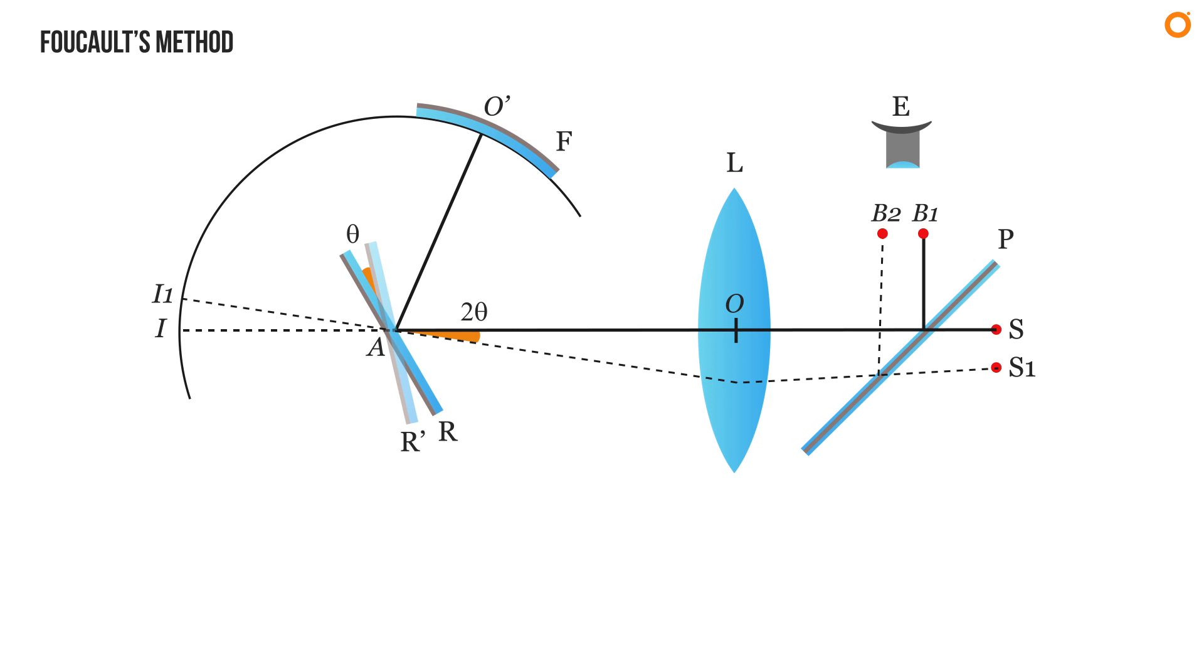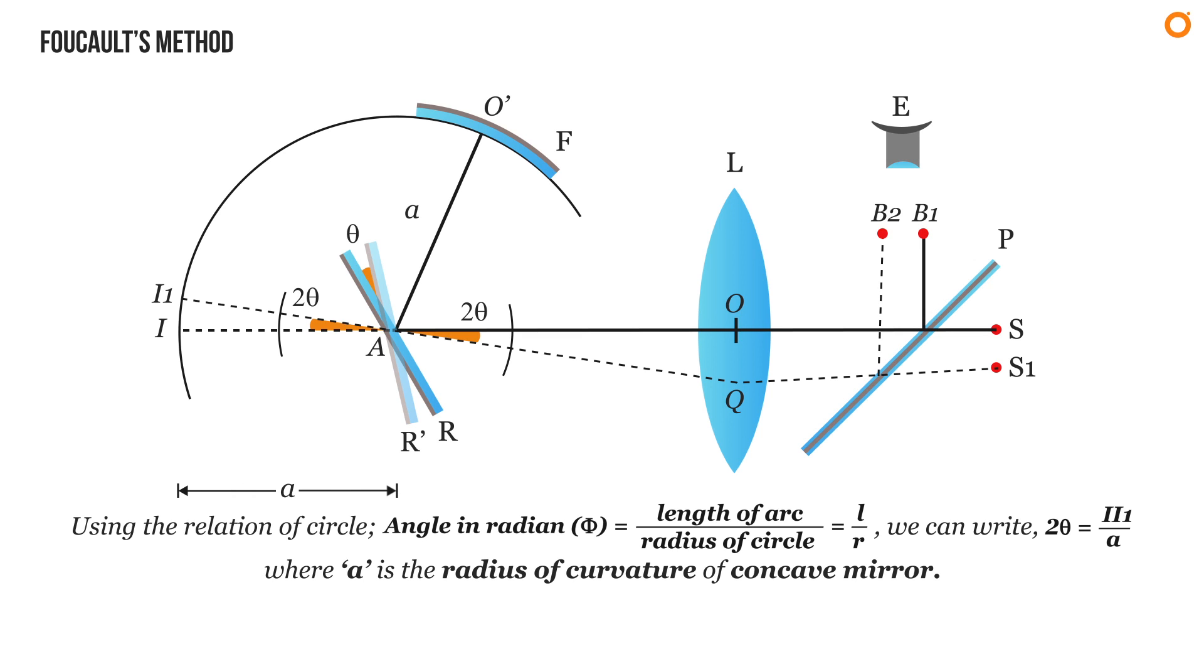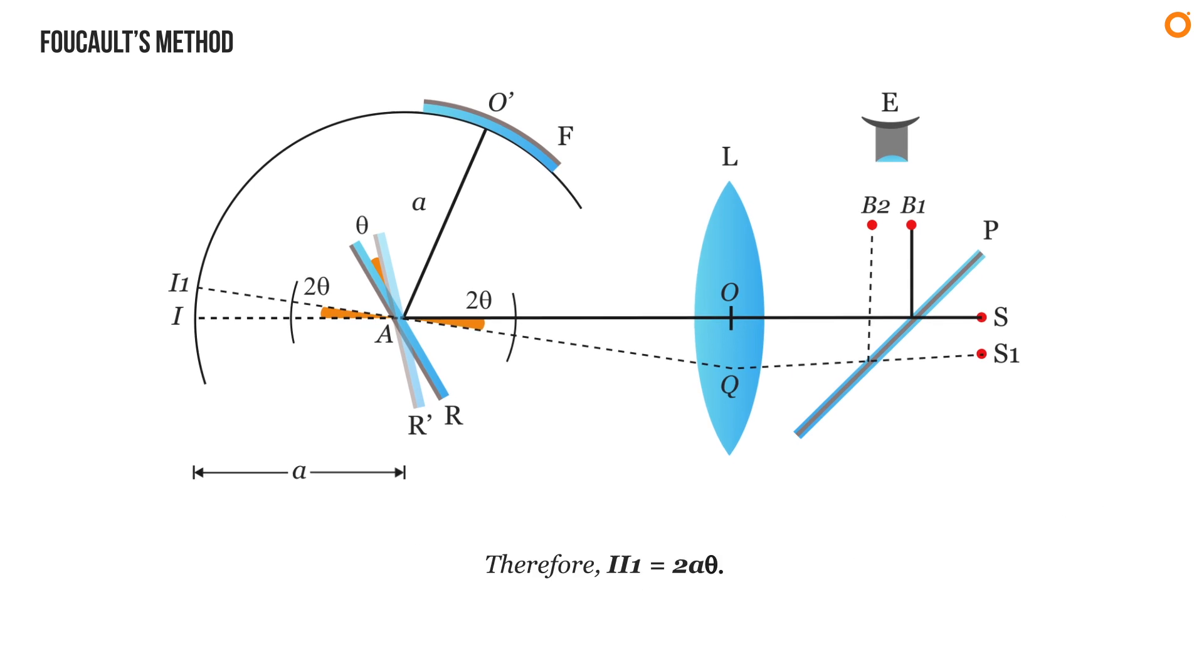That means angle OAQ equals 2 theta. Since angle IAI1 and angle OAQ are vertically opposite angles, angle IAI1 equals angle OAQ or 2 theta. Now using the relation of circle phi equals L divided by R, we can write 2 theta equals II1 divided by A, where A is the radius of curvature of concave mirror. Therefore II1 equals 2A theta.